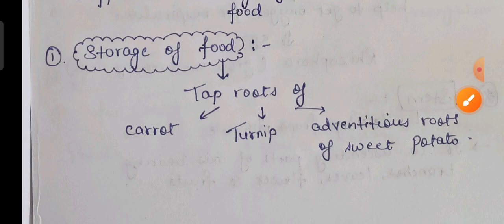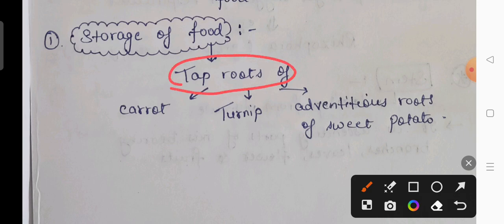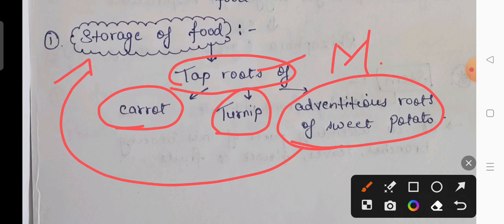The very first modification is storage of food. Tap roots are found in dicots. The tap roots of carrot, turnip, and sweet potato are modified to store food inside the root. So the carrot and turnip we eat are both examples of root modification — food is stored within the root itself.